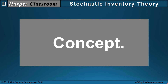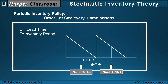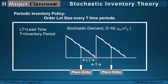Let's look at the concept. In a Periodic Review System, the inventory policy is simply order the lot size every t time periods. Here I'm placing my order — this is my inventory level — every t time periods, where t represents the inventory period and Lt is the lead time. Our demand is not a constant rate demand; our demand is a stochastic demand. We will assume that it follows a normal distribution with a mean mu and variance sigma squared.